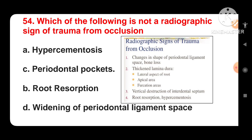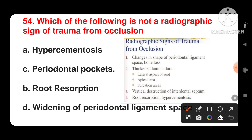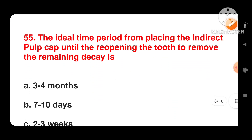Next question: which of the following is NOT a radiographic sign of trauma from occlusion? Options are hypercementosis, periodontal pocket, root resorption, or widening of the periodontal ligament space. The radiographic signs of trauma from occlusion include changes in the shape of the PDL space, thickened lamina dura in the lateral aspect, root resorption, and hypercementosis. Periodontal pocket is NOT a radiographic sign of trauma from occlusion, while hypercementosis, root resorption, and widening of the PDL space are all recognized radiographic signs.